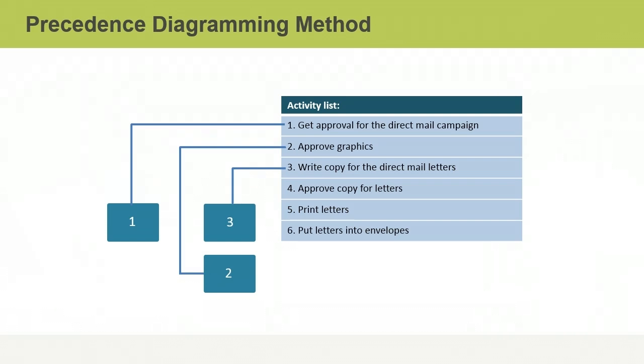Activities 2 and 3 both depend on getting approval for the project, but they are independent of each other. When there is no dependence between two activities, you place the non-dependent activity beneath the first activity on which it doesn't depend. So in this case, you place the node for activity 2, approve graphics, beneath the node for activity 3.